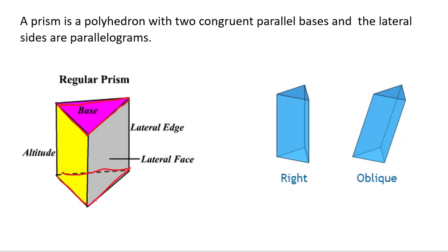You have those two parallel bases and then each one of your sides here is going to be a parallelogram. In most cases if it is a right prism, so we have all right angles in there, it's going to be a rectangle. But if it's an oblique, kind of slanted over, the sides are going to be parallelograms.